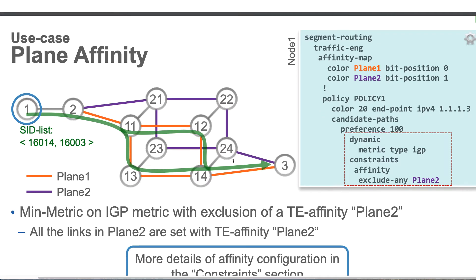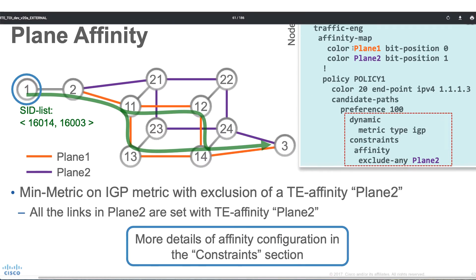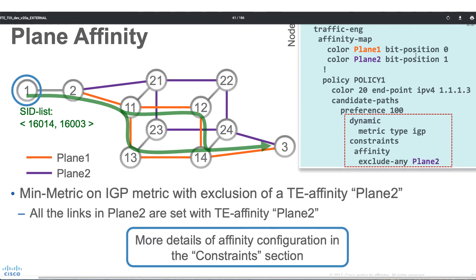Here, under segment routing traffic engineering, we are configuring an affinity map. We are giving a color — let's call it plane one — with a bit position of zero. And for the second one, we are configuring a bit position of one. Now in this policy, when we are configuring, we can pick a metric type of IGP but at the same time add a condition. This was the optimization objective, and this is the constraint we are associating with it. We are doing a condition based on affinity and saying exclude anything that is plane two. That means find a good path based on IGP, but make sure you are not picking any link which belongs to plane two.